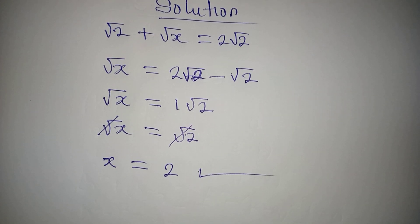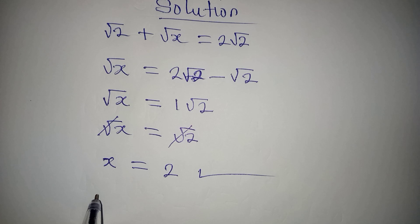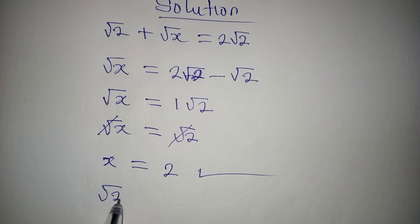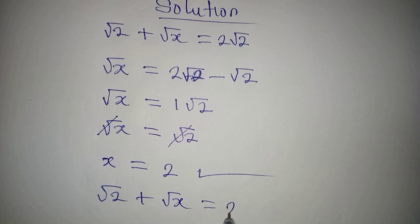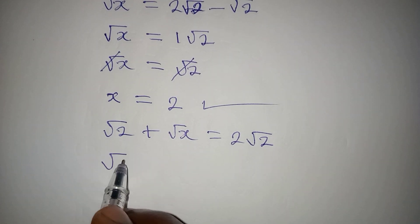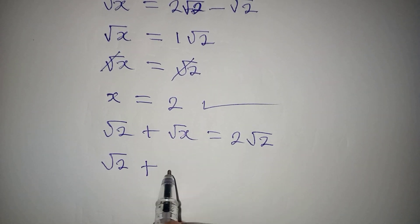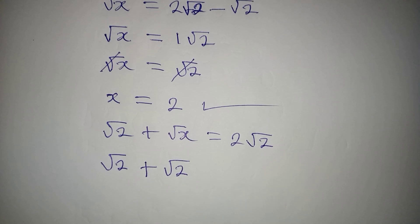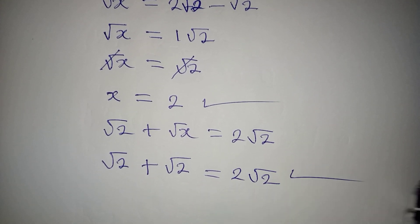And you may want to check this and put this back into the equation. The original equation is square root of 2 plus square root of x equal to 2 root 2. Now x is 2, so we have root 2 plus root 2, which equals 2 root 2.